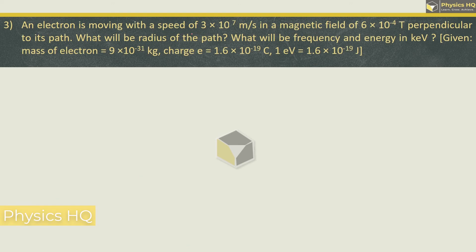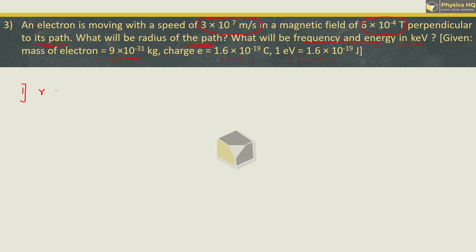An electron is moving with a speed of 3 × 10⁷ m/s in a magnetic field of 6 × 10⁻⁴ tesla perpendicular to its path. What will be the radius of the path, the frequency, and energy in kilo electron volt? Mass, charge, and 1 electron volt value are given. First, we are supposed to find the radius, which is given by r = mv / (qB).